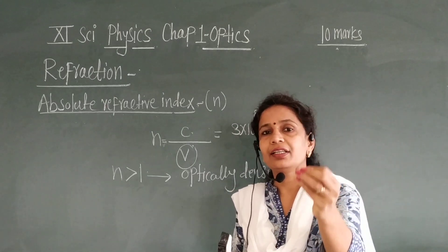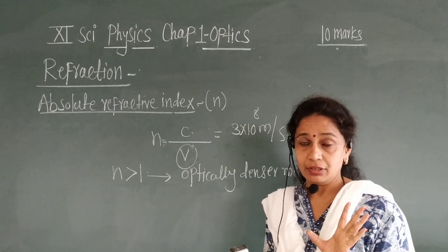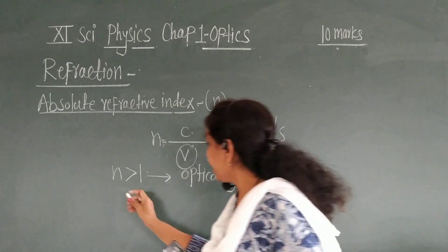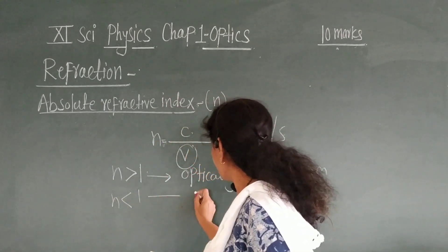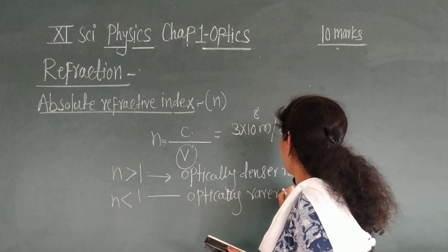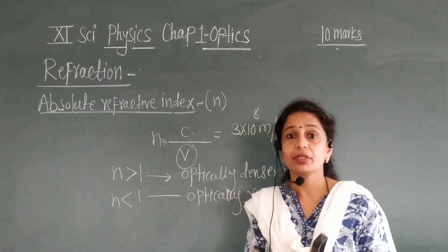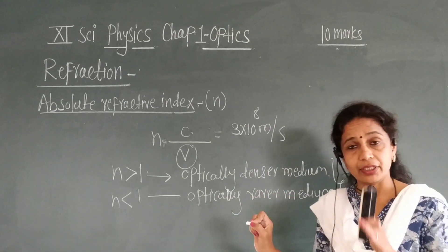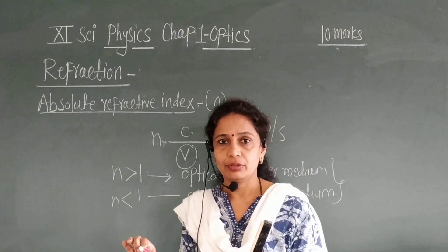In a denser medium, the refractive index has a large value. When N is smaller than 1, it is an optically rare medium. In a rare medium, the refractive index has a small value.